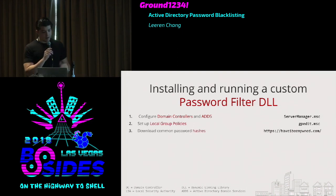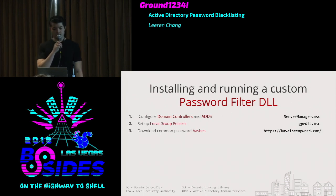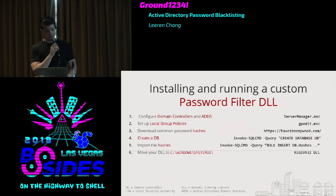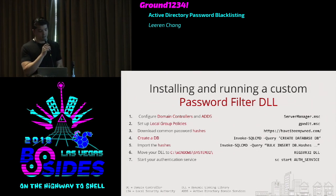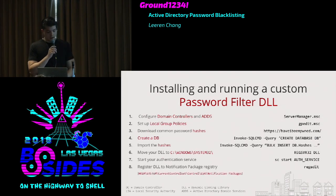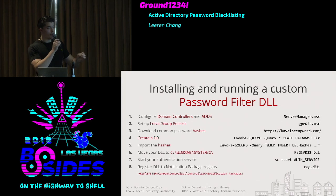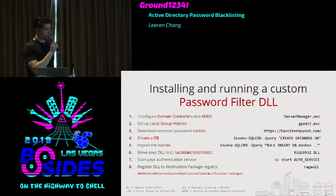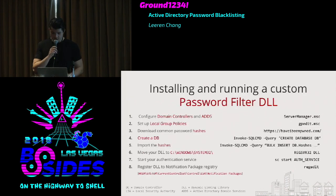Next, download common password hashes — the most common source now is haveibeenpwned.com, mostly SHA-1 hashes. Import those into your database. Then move your DLL to System32 and register it in the notification packages registry so the Local Security Authority knows to load it on boot. Start your authentication service. It's really simple and shouldn't take too long — you really should have this in whatever corporate environment you're using.